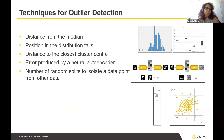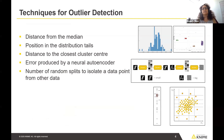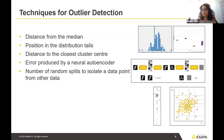The good news is that for anomaly and outlier detection, there are a number of algorithms and techniques already available. For example, we can measure the distance from the median in the dataset, check the position of the data point in the distribution tail, build a system of clusters and measure the distance from the closest cluster, use a neural autoencoder, or use an isolation forest. All these techniques exist and are commonly used for outlier detection, and we will see them in this webinar.